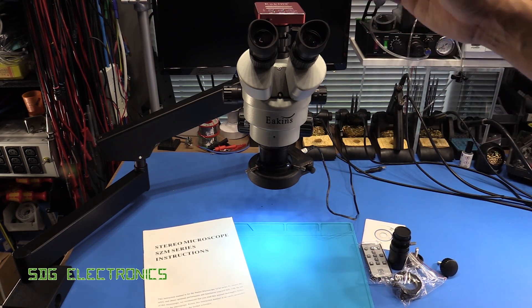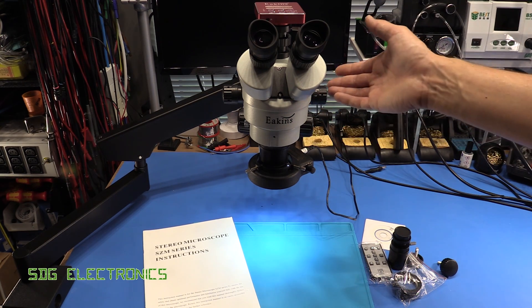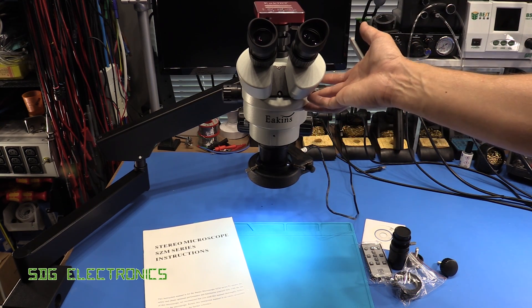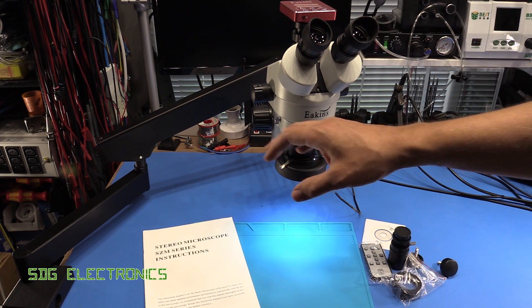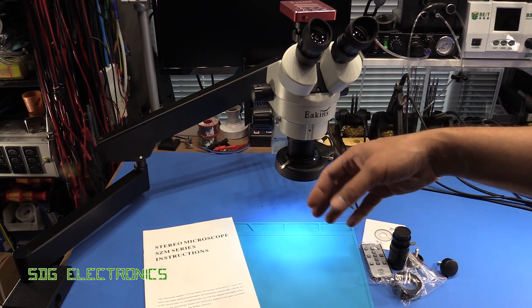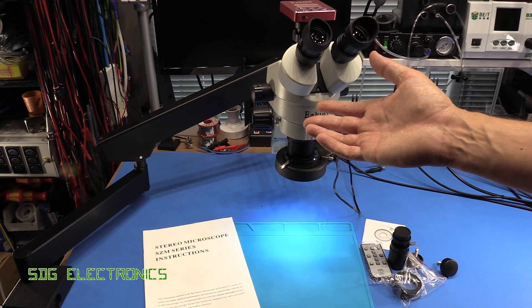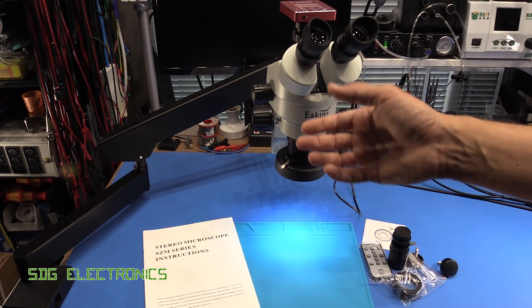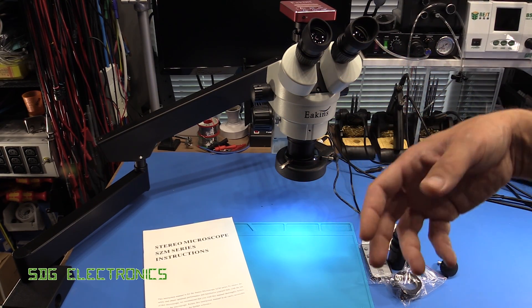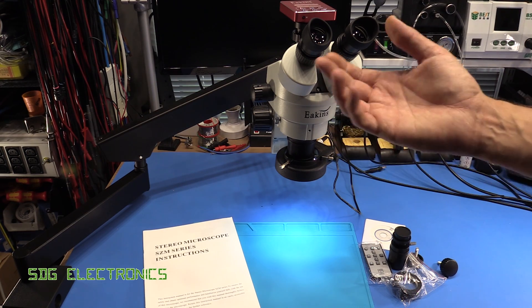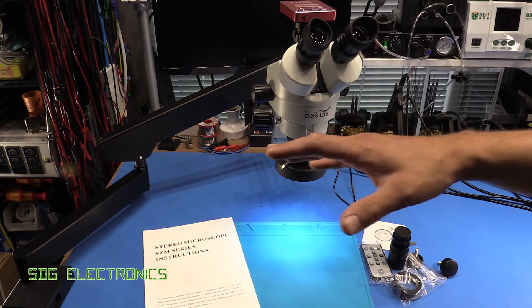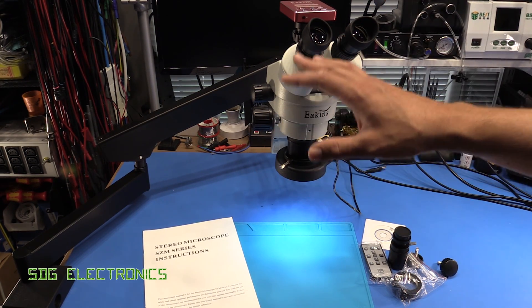Following on from that video, I had a chat with the manufacturer Eakins and we've put together potentially a more useful kit for anyone who wants to do soldering in their lab. One of the main things that I found with the Amscope is that double arm boom stand, which is a really nice stand, is very very heavy and it's also really bulky so it takes up loads of room on your bench.